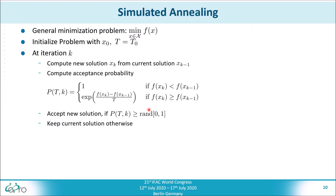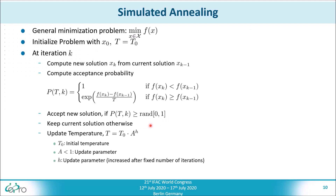The new solution is accepted if the value of the acceptance probability function is greater than or equal to a uniformly distributed random number between 0 and 1. Otherwise, we keep the current solution. Then the temperature is updated depending on the initial temperature, a constant update parameter a which is less than 1, and an exponential parameter h which is increased after a fixed number of iterations. The optimization terminates when the temperature reaches a specified temperature threshold t_min.